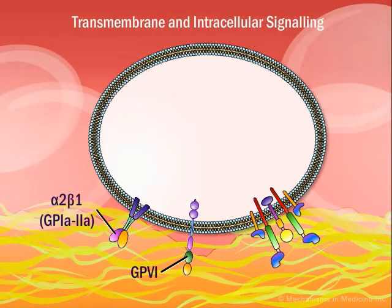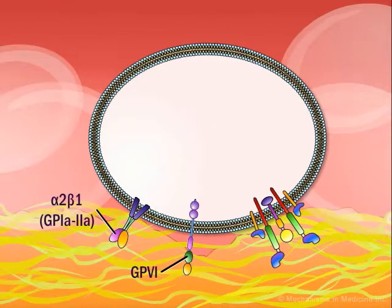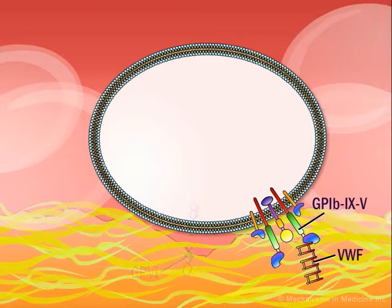Adhesion of platelets to the exposed subendothelium is influenced by shear rates. At high shear, alpha-2-beta-1 and GP6 are not sufficient to initiate binding to collagen, and binding of the GP1B9-5 receptor to von Willebrand factor, abbreviated here as VWF, that is immobilized on collagen, becomes essential in platelet adhesion.